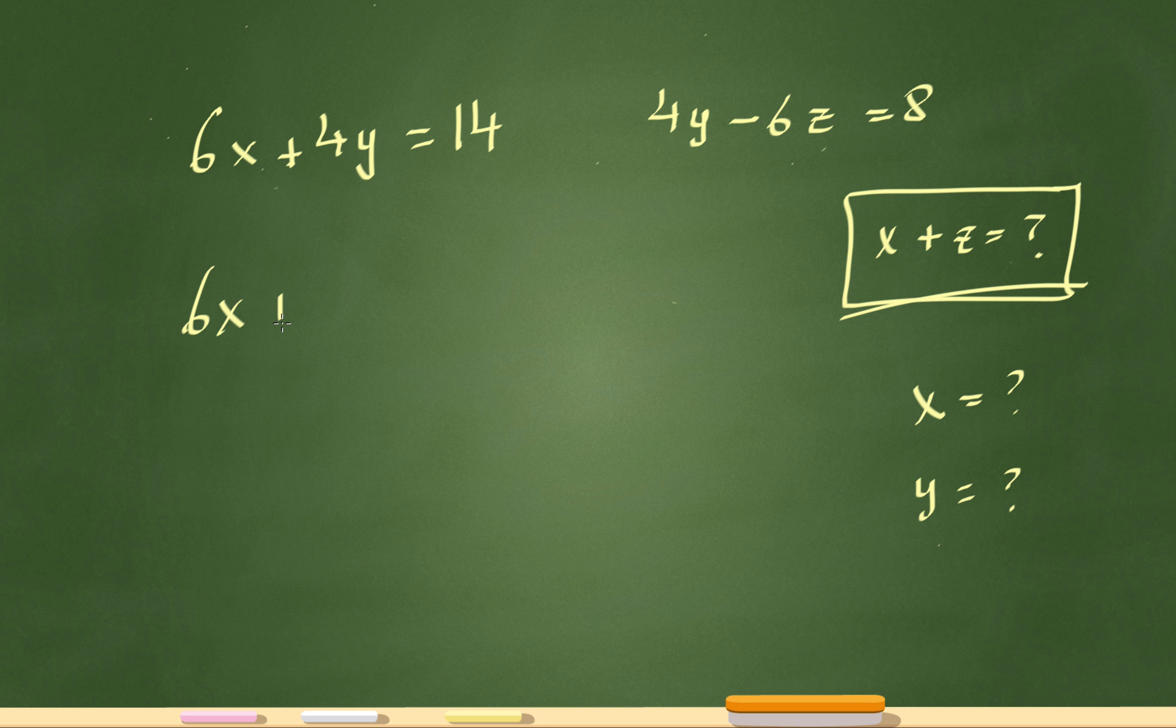So check it out. I know that 6x plus 4y equals 14 is one of the equations, right? And the other one is 4y minus 6z equals 8.